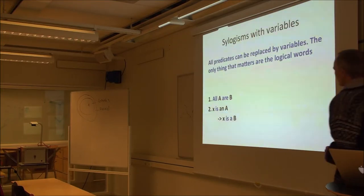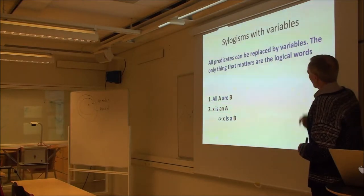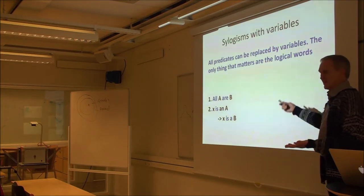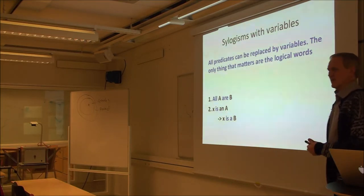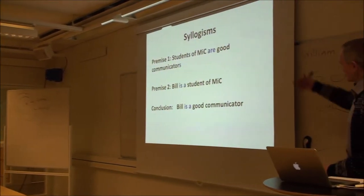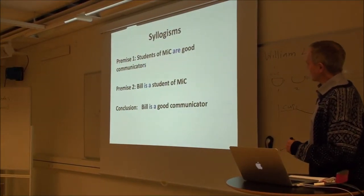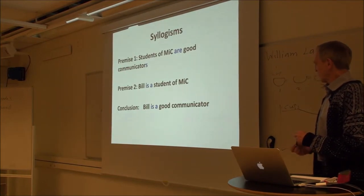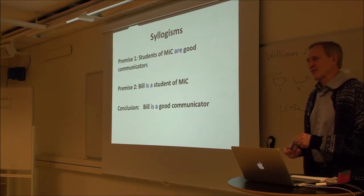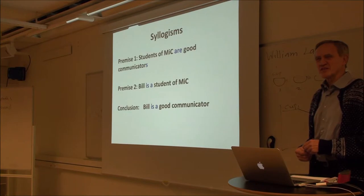All predicates can be replaced by variables — the only thing that matters are the logical words. So: all A are B; X is an A; therefore X is B. We could have spoken about Frenchmen or Italians — it doesn't make any difference. Greeks and proudness are not what's at stake. Here is another example: students of MIC are good communicators; Bill is a student of MIC; therefore Bill is a good communicator. You can see it's the same pattern.